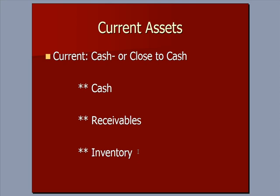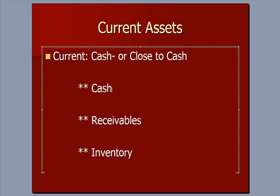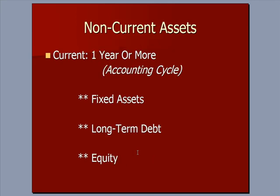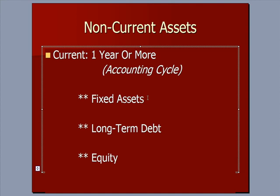If you want to find where your cash is tied up, it's probably tied up largely in receivables and inventory. Non-current assets are those that won't be cash or won't affect cash for more than a year. Your fixed assets — trucks, buildings, land, equipment — you're not going to sell; you're going to use them in your business. Long-term debt means cash won't go out the door for a year or more, and your equity you're not going to pay back to shareholders for a year or more.